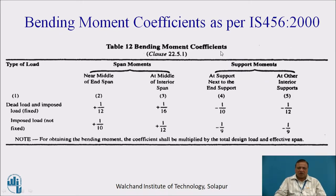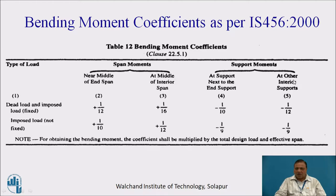This is Table 12 for bending moment coefficients from IS-456-2000. Here we find the span moments and the support moments given separately. For the span moments, we have near middle of end span and at the middle of interior spans. For the support moment, we have at the support next to the end support and at over interior supports. The coefficients are given for dead load and live load separately. For dead load and imposed fixed load together, the coefficient for span moment is 1/12, and for live load which is changing, it is 1/10, near the middle of the end span.